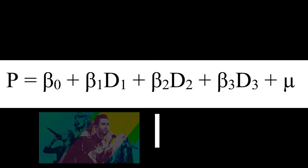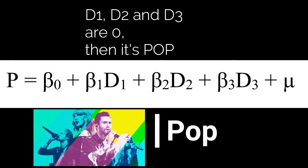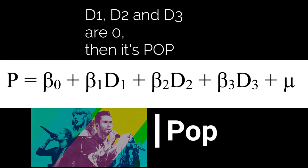We do not need to include a dummy variable for pop because if D₁, D₂ and D₃ are 0, then it means that the person prefers pop. I hope you understood all about dummy variables. See you in the next video.